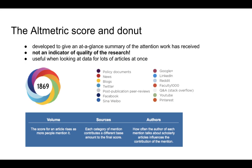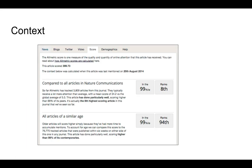The altmetric score and donut: the more platforms a piece of research features on — policy documents, news, blogs, Twitter, etc. — the more colours will appear within the altmetric donut. Each platform has a different weighting: a tweet is worth one point, whereas news coverage is worth approximately eight points. There are different weightings for different forms of coverage. We can compare this research to similar research and find out where it sits in percentile ranks — for example, number 8 in articles in Nature Communications, ranking 4,097 for articles of a similar age.